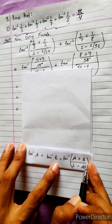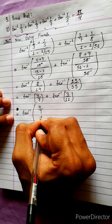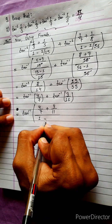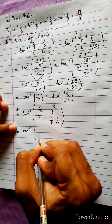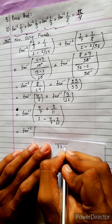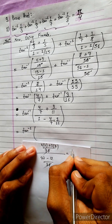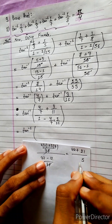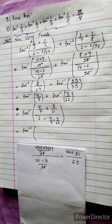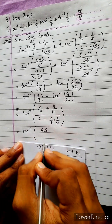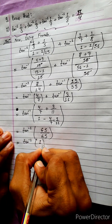Applying tan inverse A plus tan inverse B equals tan inverse A plus B upon 1 minus AB again: 11 times 7 is 77. We get 4 into 11 plus 3 into 7 upon 77 minus 12, which gives 44 plus 21 upon 65, that is 65 upon 65, equals tan inverse 1.